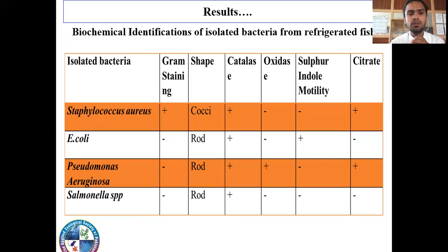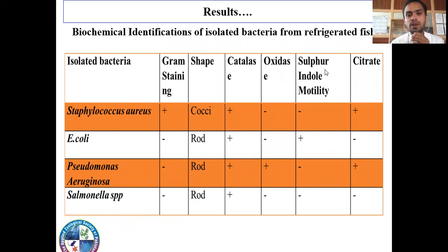Now coming to our results. Biochemical identification of isolated bacteria from refrigerated fish. These are the isolated bacteria: Staphylococcus aureus, E. coli, Pseudomonas, and Salmonella. This is the gram staining result and its morphological appearance. Then the results of catalase, oxidase, sulfur indole motility test, and citrate test for these bacterial isolates are shown.